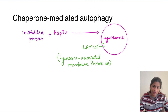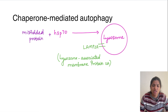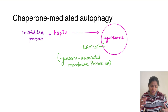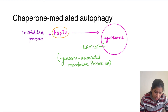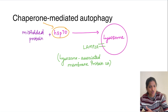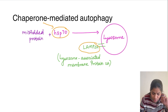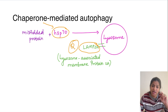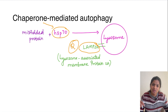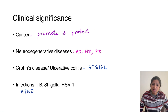The fourth type is chaperone-mediated autophagy. Chaperones are responsible for proper folding of proteins. Whenever there is a misfolded protein, a chaperone — HSP70, which is heat shock protein 70 — will associate with the misfolded protein and take it to the lysosomal membrane, where the misfolded protein gets degraded. The complex of misfolded protein and chaperone enters through a channel called LAMP2A — lysosome-associated membrane protein 2A — which has been asked as a question.